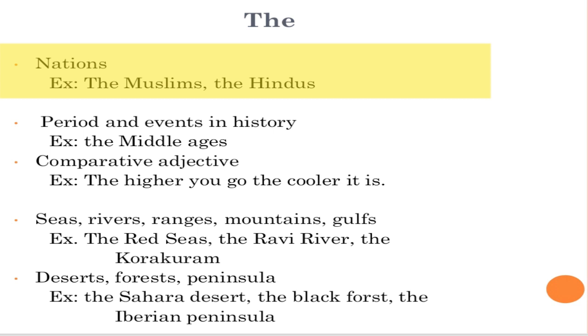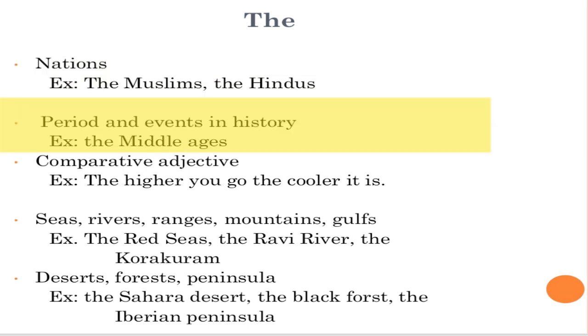Rule number seven: periods and events in history. We use 'the' with historical periods — the Renaissance period, the Reformation period, the Islamic period, the Muslim glory.